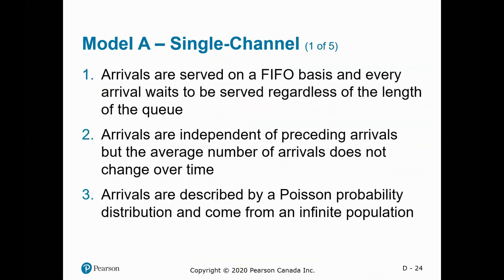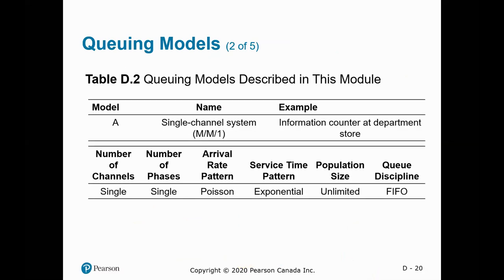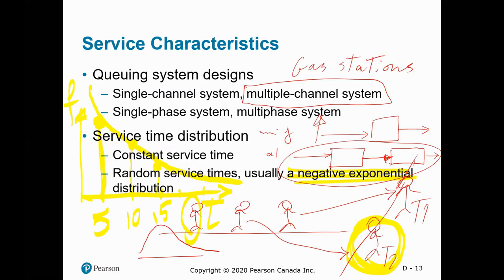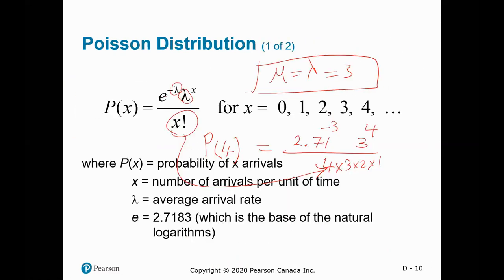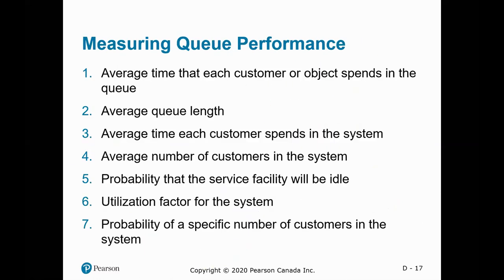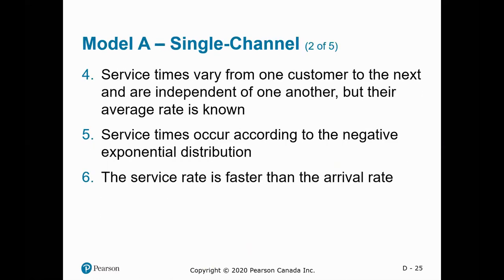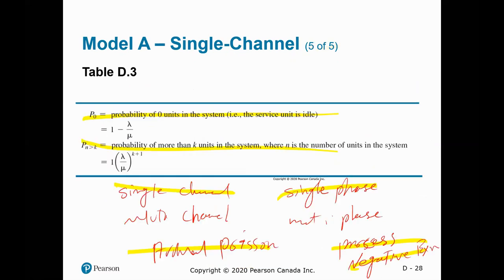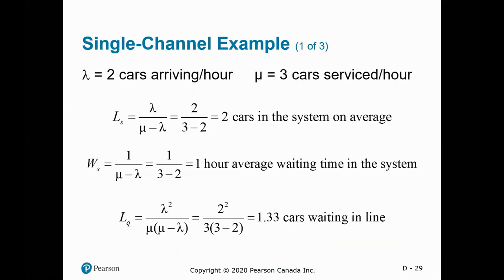If the question says single channel, single phase, arrival is Poisson, process is negative exponential — then you use those formulas to answer the question. You don't need to go to the Poisson formula (e^(−λ)...) and panic. For most questions, you simply plug into one of the queue formulas. For example: what is the average number of units in the system? Just divide lambda by (mu minus lambda).